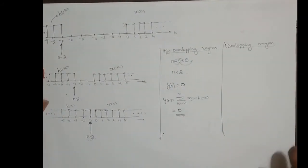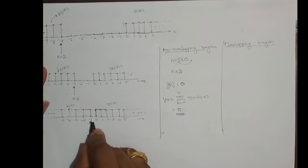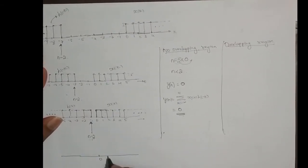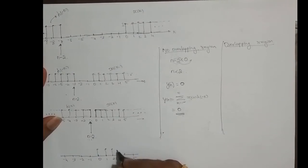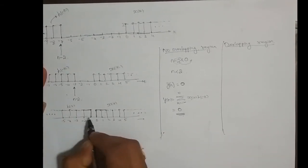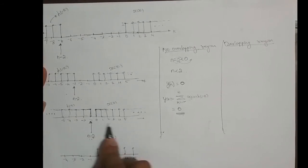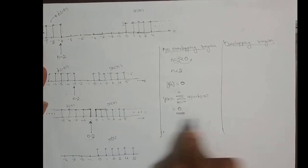Now when does overlapping start? As I move n minus 2 further right, the overlapping region starts. I'll keep the slider at 4 to demonstrate. If I keep n minus 2 at 10, the overlap region goes from 0 to 10. If I keep it at 100, overlap goes from 0 to 100. If at infinity, overlap goes from 0 to infinity. So the overlap region starts at 0 and ends at n minus 2.